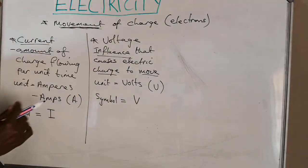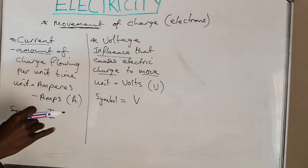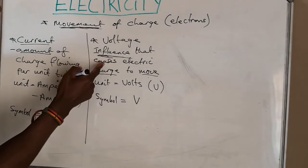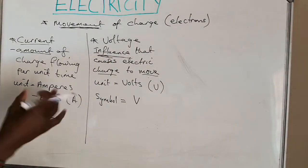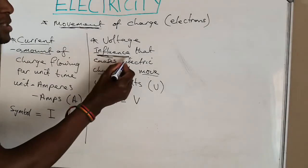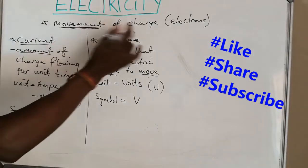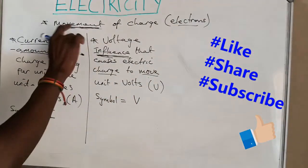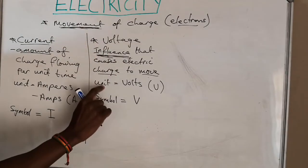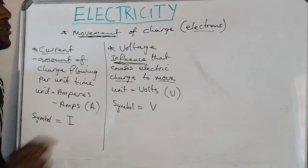Voltage is basically the influence — what is causing this movement to take place, what is pushing the charge. I don't want to say it is the pressure or the force, because in science when we say pressure the units should be pascals, and if we say force the units should be newtons. I also don't want to call it energy, because energy would be in joules and under electricity we can also calculate electrical energy. So I just want to call it an influence that causes the movement of electric charge — and that is voltage.